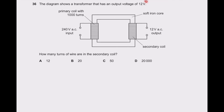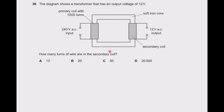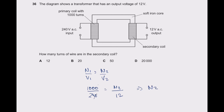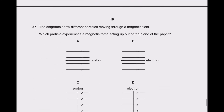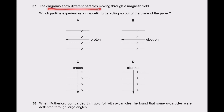Question 36: a transformer has output voltage 12 V, input voltage 240 V, and primary turns 1000. Using n₁/v₁ = n₂/v₂: 1000/240 = n₂/12, so n₂ = 50 turns. Option C is correct.